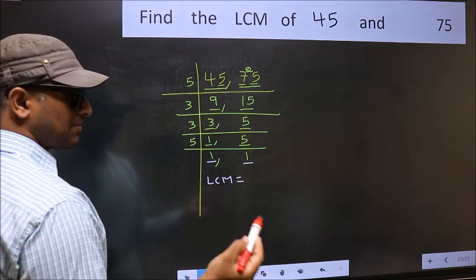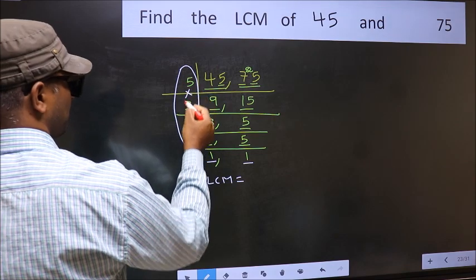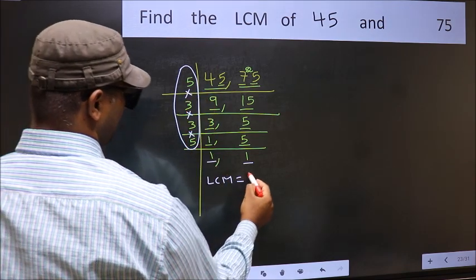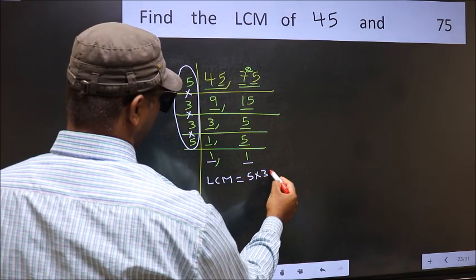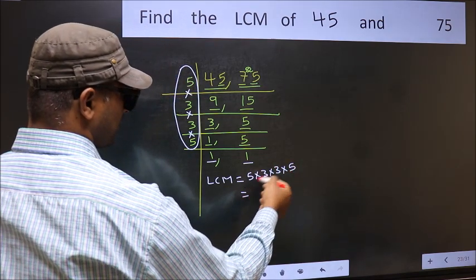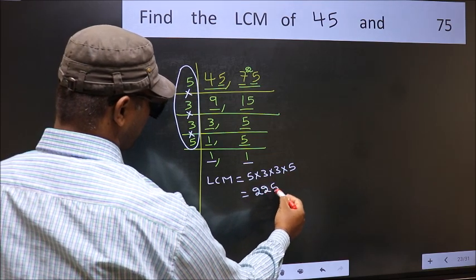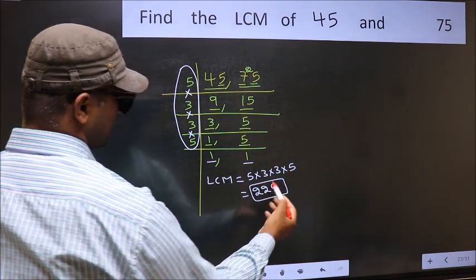So our LCM is the product of these numbers. That is 5 into 3 into 3 into 5. When we multiply these numbers, we get 225 as our LCM.